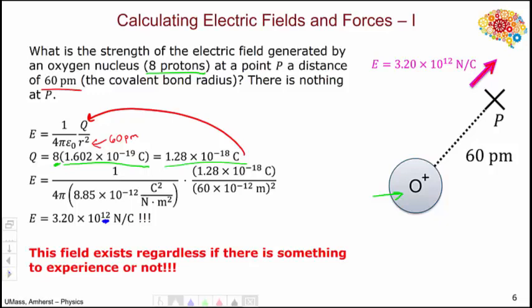It's worth pointing out that this field is a real thing and exists regardless if there is something to experience it at P or not. The oxygen nucleus will generate a field that surrounds it, which at point P has this value, respective of if there is actually an object at point P.